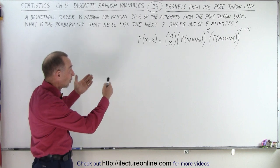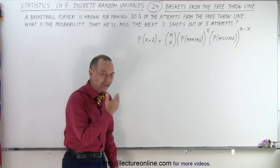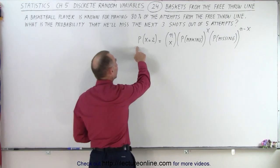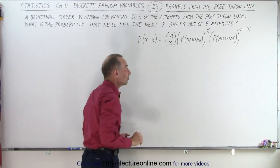Okay, again we're going to use our equation. Here, since he's going to miss three out of five, that means he's going to make two. So let the probability that x equals two, meaning the probability that he'll make two out of the five shots.